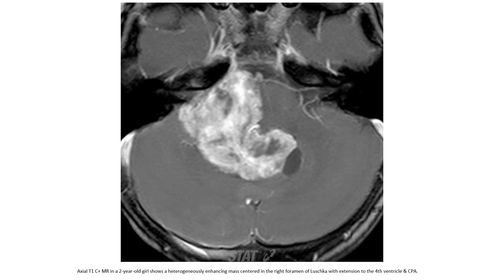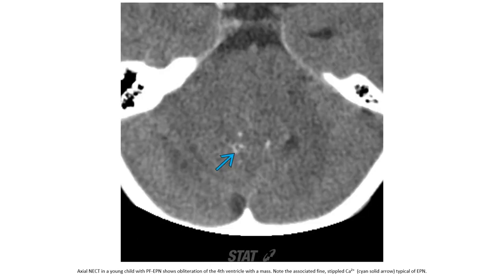This is T1 with contrast in a two-year-old child, showing a heterogeneous mass centered at the area of the foramen of Luschka, which extends into the fourth ventricle and CPA cistern. This is a non-contrast CT in a child with posterior fossa ependymoma, showing obliteration of the fourth ventricle with a mass and associated fine stippled calcification, typical of ependymoma.